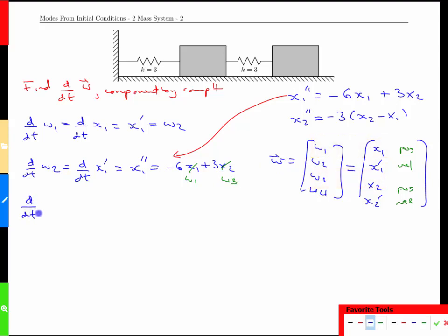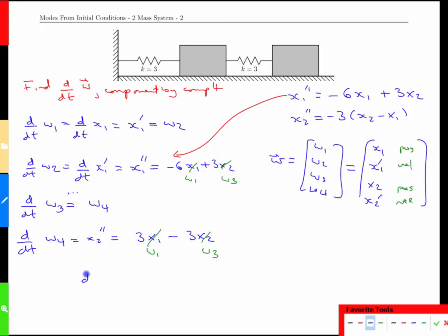Then we repeat for the last two, and it turns out that this derivative is w4 with some work in between and a similar vein. The derivative of w4 is x2 double prime, and that is negative 3x2. Let's put them in the right order here. Positive 3x1 minus 3x2. That's w1, and that's w3. Having done that work, it turns out it's really easy to put this into matrix form.